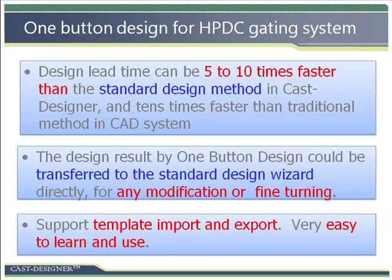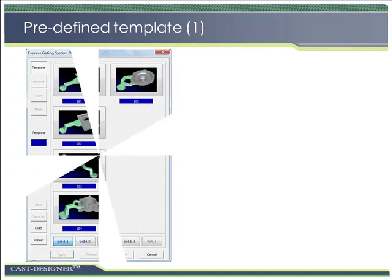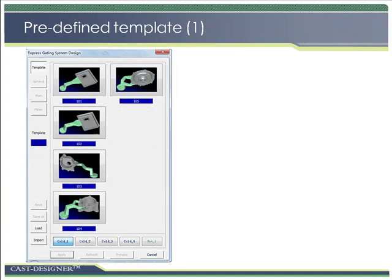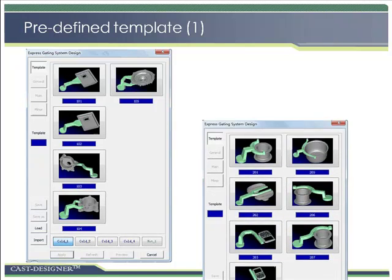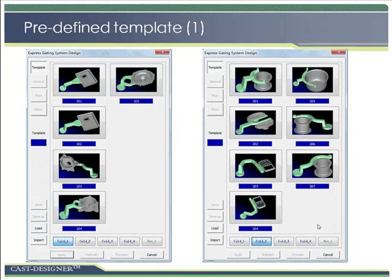All design processes can be recorded as data templates with import and export functions. The one-button design function is really very easy to learn and use. There are around 25 types of predefined gating systems inside the software package, covering almost all gating systems in the casting industry, including cold chamber die casting and hot chamber die casting. The user can simply pick up the similar gating system and make some modifications.